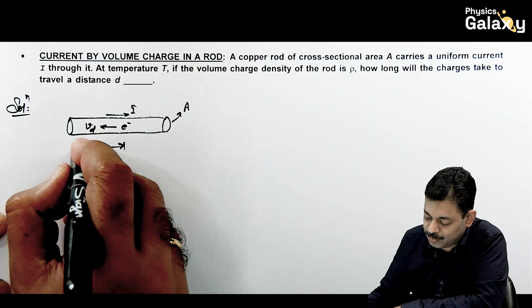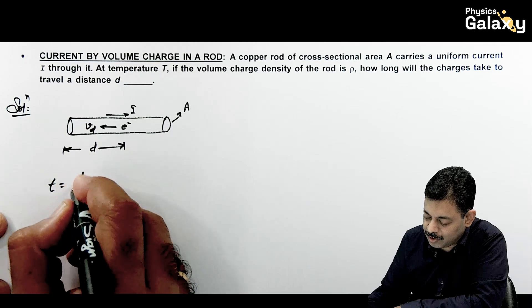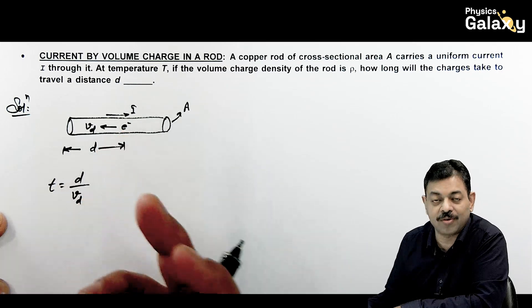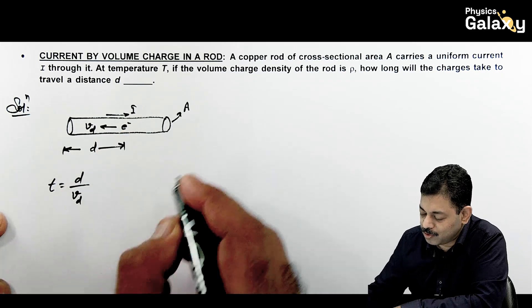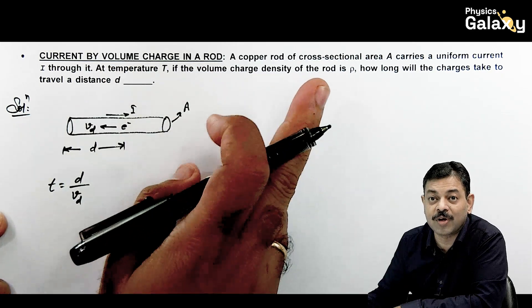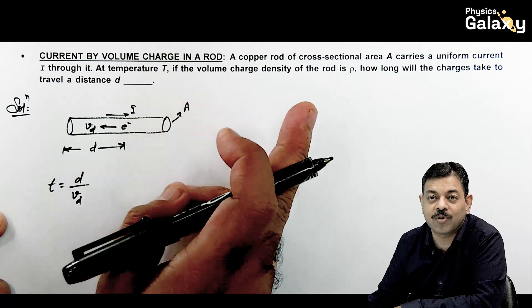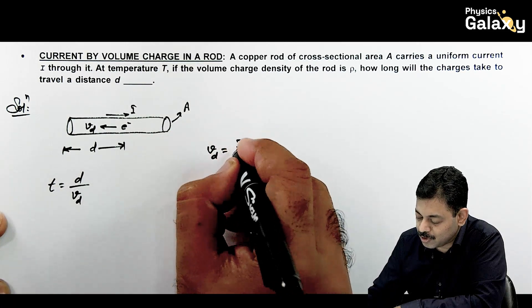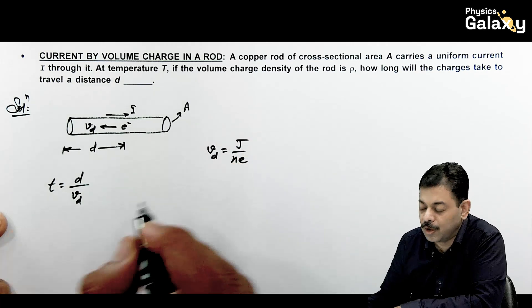So if we have to travel D distance, time can directly be written as D upon VD. How much time will it take charges to travel D distance? Electrons are flowing, so it is D by VD. So drift speed we can calculate in terms of the given parameters in the question. We should not introduce any other variable or constant. So drift speed we know is given as J over N E.